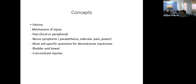Dermatomes and myotomes are very important — you can't assess the spine unless you know them, and there's no other way to know them except to keep going through them. When you ask a spine history, be specific and keep it dermatomal, because that gives you the level. In spine, the lesion or pathology must match the dermatome, otherwise something else is going on.